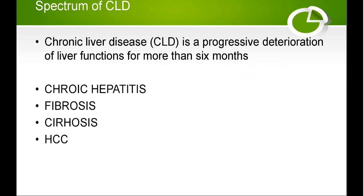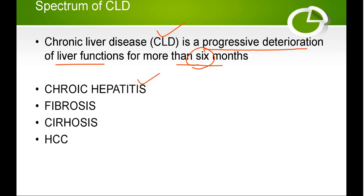Chronic liver disease is a progressive deterioration of liver function for more than six months. Whether synthetic or metabolic, liver functions progressively deteriorate over time. If liver function worsens for more than six months, it will be referred to as CLD — which includes chronic hepatitis (infectious or non-infectious), liver fibrosis, cirrhosis, and hepatocellular carcinoma.